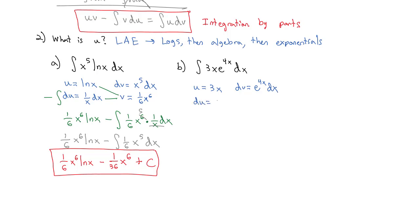The derivative of u gives du equals three dx. For v, the antiderivative of e to the four x requires a little substitution — we divide by four because differentiation would multiply by four, so v equals one-fourth e to the four x.